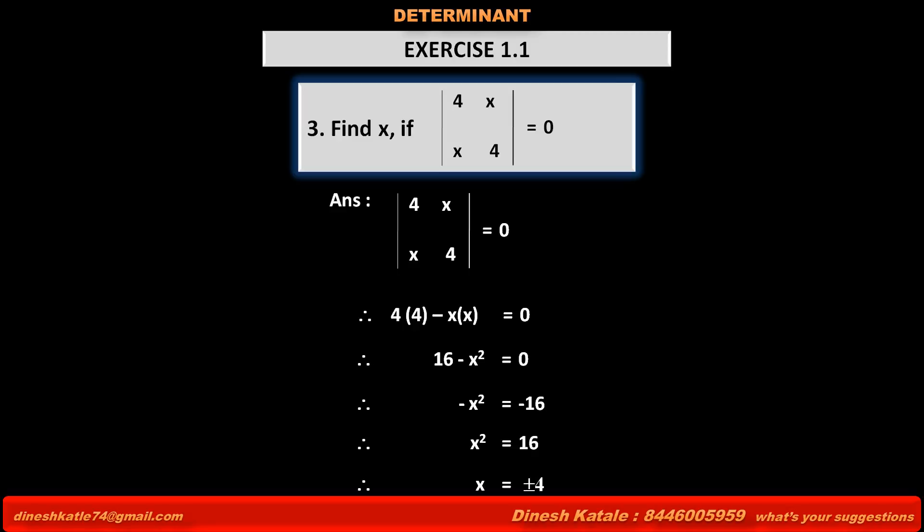If we transpose minus 10 to the right hand side, then the equation becomes 4X is equal to 3 plus 10, 13. Therefore, X is equal to 13 upon 4.